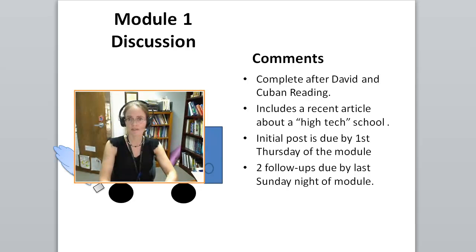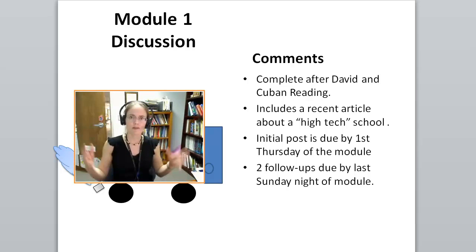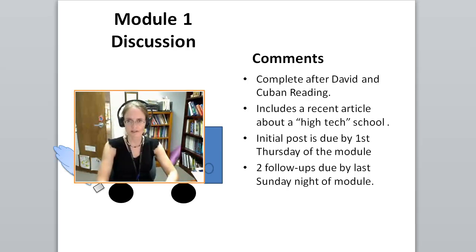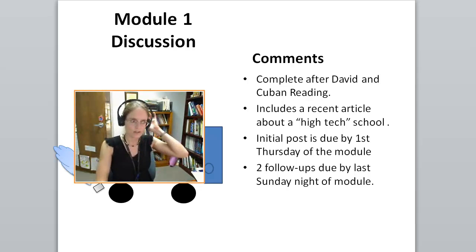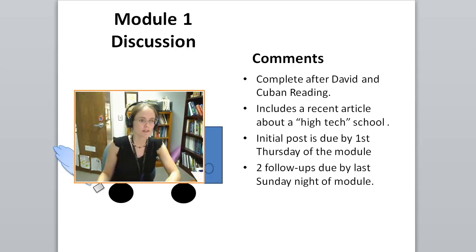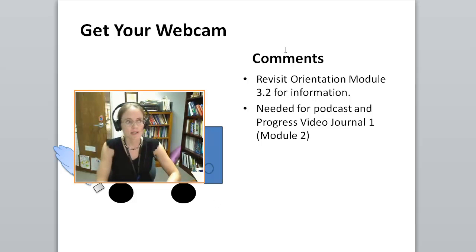In this module we're also going to have a discussion. I recommend you complete it after the David and Cuban reading, because that reading gives you the big picture and helps you see some of the issues. Then this discussion article is about a high-tech school — it's about three pages long, like online newspaper pages. It's a good, easy read. Try to make your initial post by the first Thursday of the module, and do two follow-up responses to peers by the last Sunday night of this two-week module.